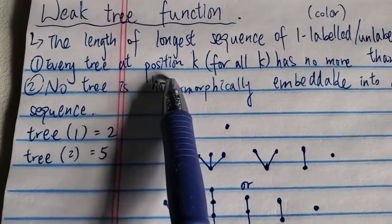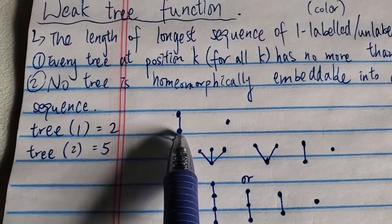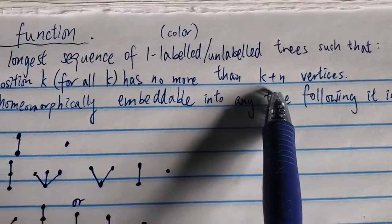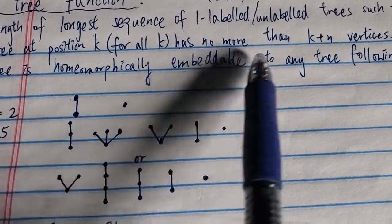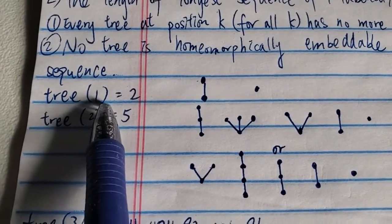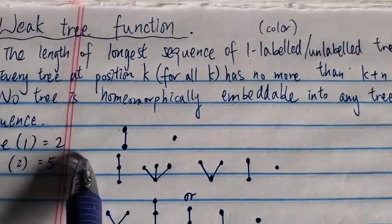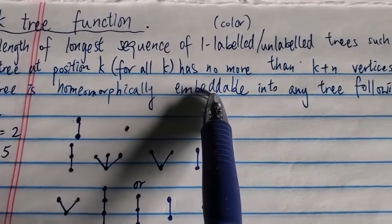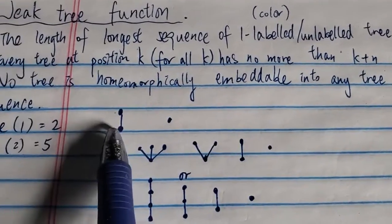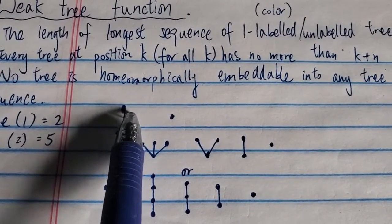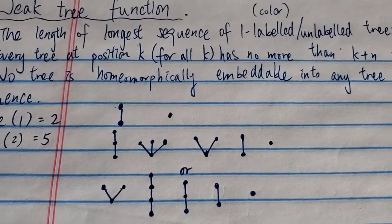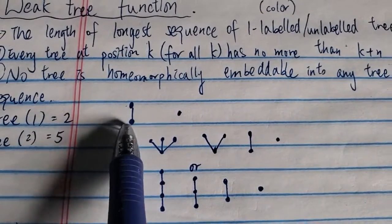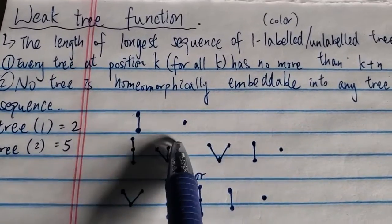Every tree at position k — so let's say position one — you can have no more than k plus n vertices. In this case, position one, with n equal to one, you cannot have more than one plus one vertices, so you cannot have more than two. Each dot is considered to be one vertex, or some people call that a node. So you cannot have more than two vertices at position one — you can only have one or two, but not more than two.